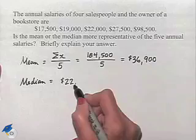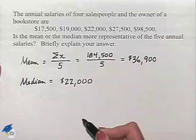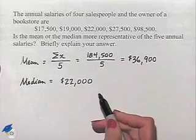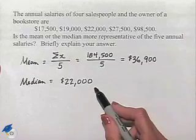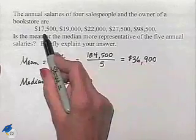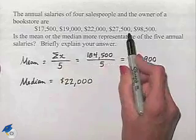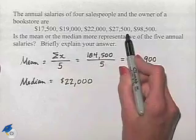Now we're supposed to decide whether the mean or the median is more representative of the five annual salaries. Well, you can see that we end up having most of our values less than $30,000. That is four of those.